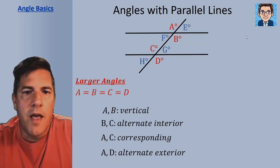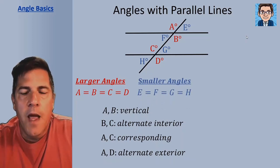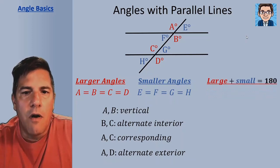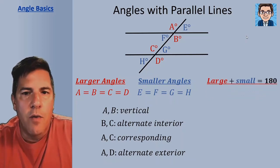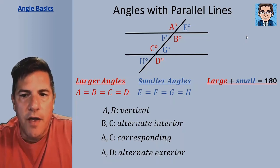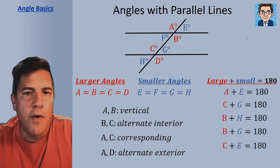Similarly, the four angles smaller than 90 degrees — labeled E, F, G, and H — are all going to be equal to each other. And any combination of one large and one small angle is going to give us 180. So if you take any of the larger angles A, B, C, or D and add it to any of the smaller angles E, F, G, or H, you're going to get 180 degrees.